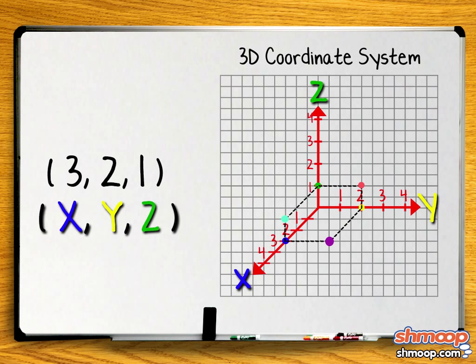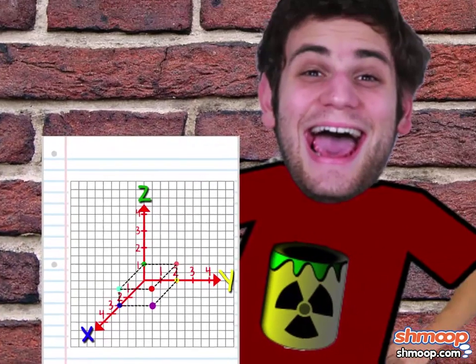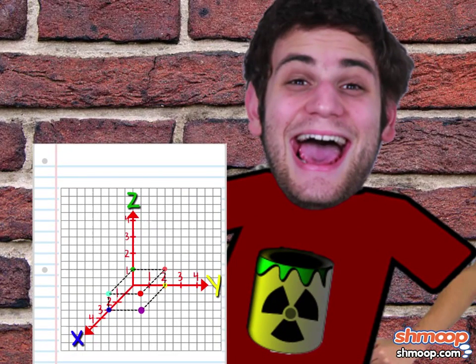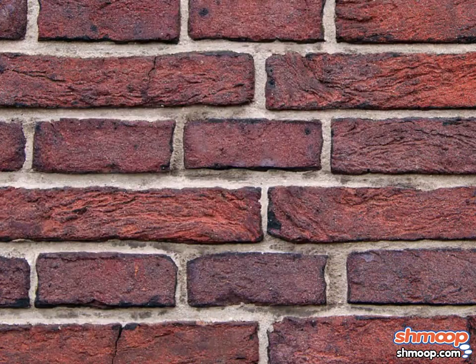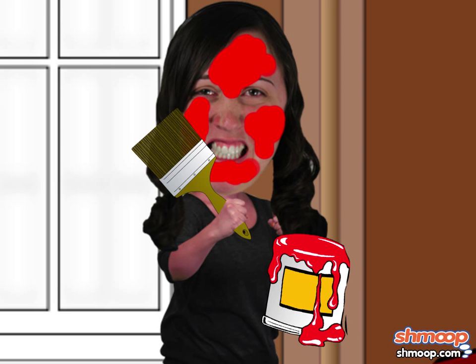We can draw a 3D box by projecting dotted lines to the point — and ta-da! 3, 2, 1 is where the red dot is. It takes him long enough, but George finally finishes plotting these points and has regained his freedom.